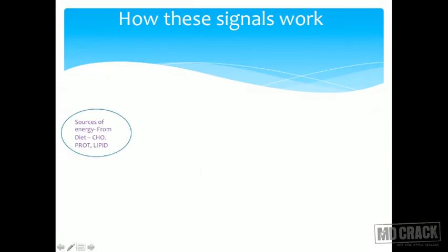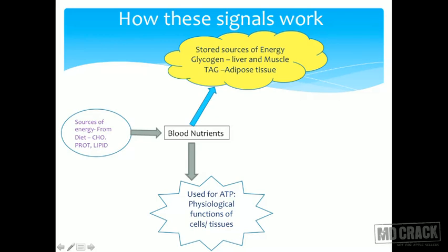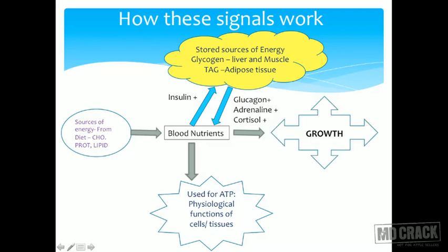Sources of energy from the diet — carbohydrates, proteins, lipids — constitute blood nutrients. They are used for ATP and physiological functions within different cells and tissues. They are also stored as sources of energy: glycogen in the liver and muscle, triacylglycerol in the adipose tissue. Storage is stimulated by insulin; release is stimulated by glucagon, adrenaline, and cortisol, all acting on hormone-sensitive lipase.